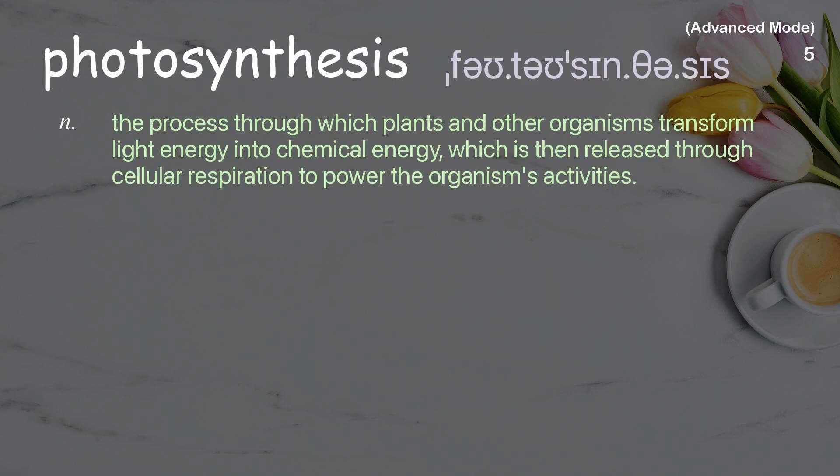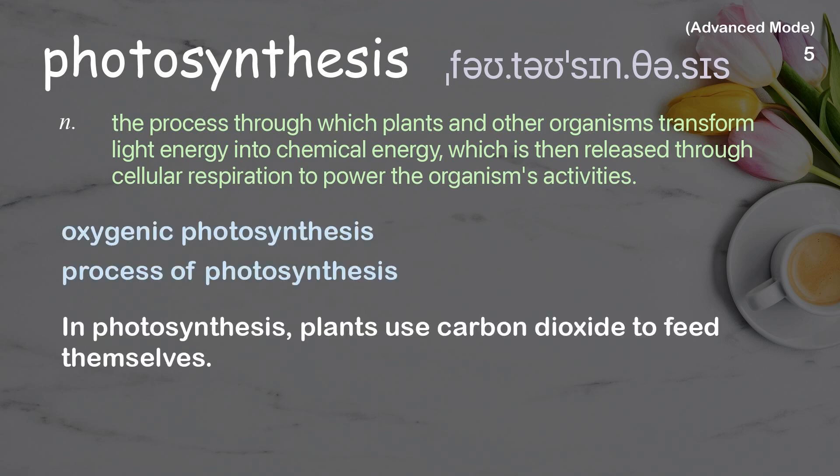Photosynthesis: the process through which plants and other organisms transform light energy into chemical energy, which is then released through cellular respiration to power the organism's activities. Examples: oxygenic photosynthesis, process of photosynthesis. In photosynthesis, plants use carbon dioxide to feed themselves.